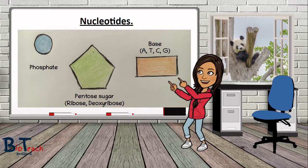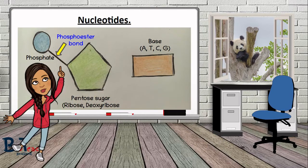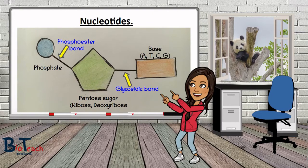All three components of the nucleotide have to be bonded together to form one unit. The phosphate group bonds with the fifth carbon in the pentose sugar in a condensation reaction. The bond formed is known as a phosphoester bond, highlighted by the yellow arrow. Next there is a bond between the nitrogenous base and the first carbon of the pentose sugar — this bond is a glycosidic bond, which we discussed when we looked at carbohydrates.